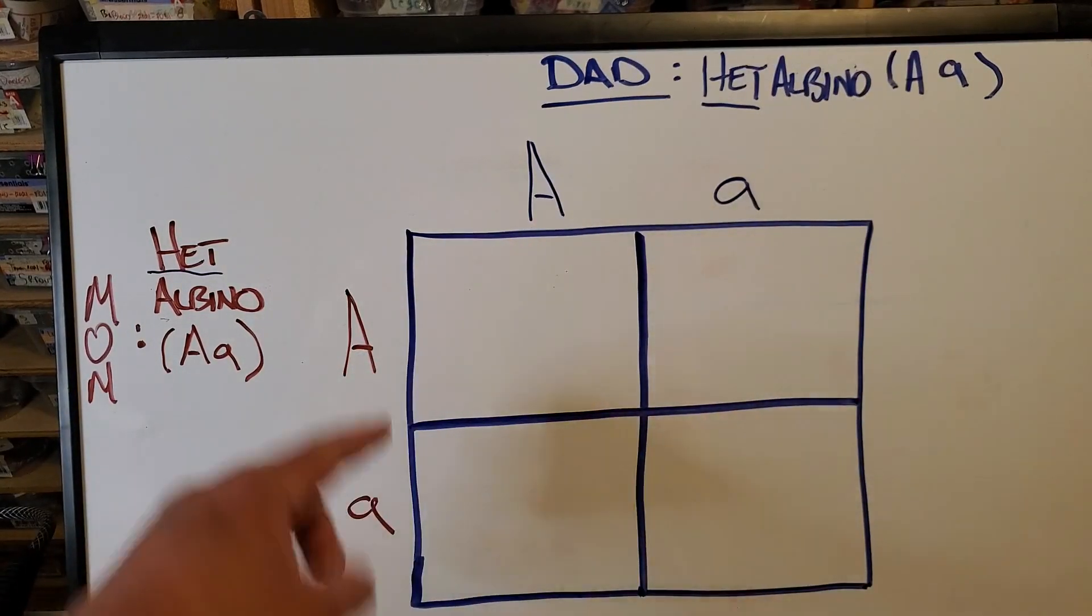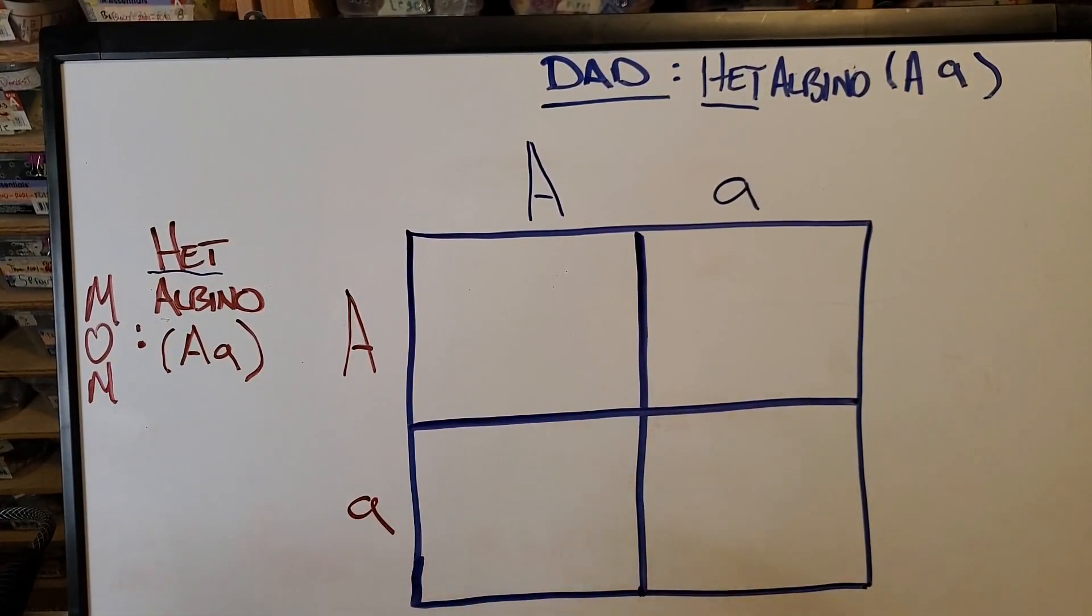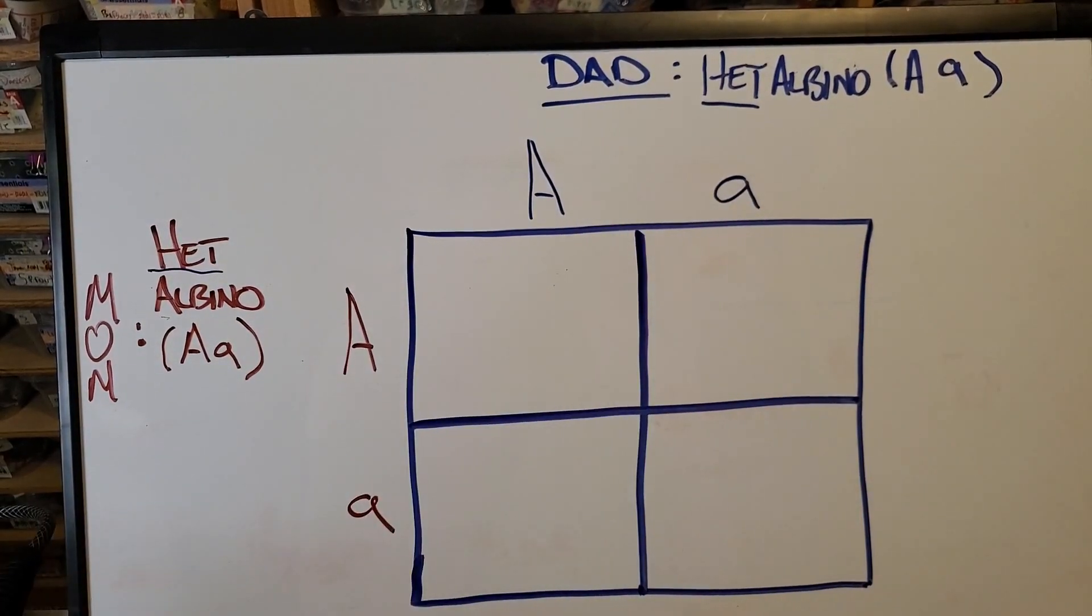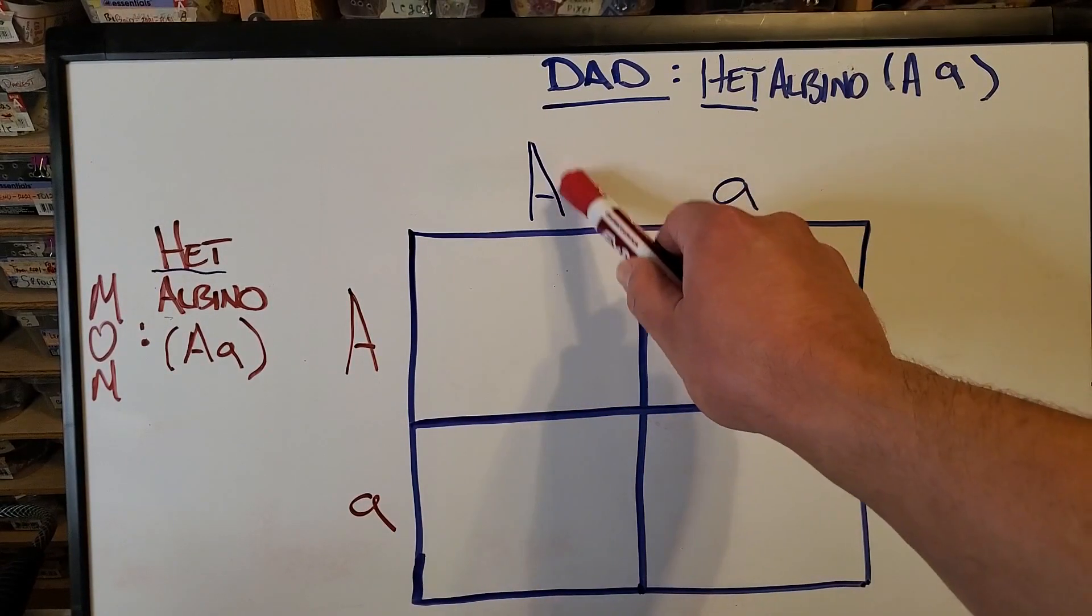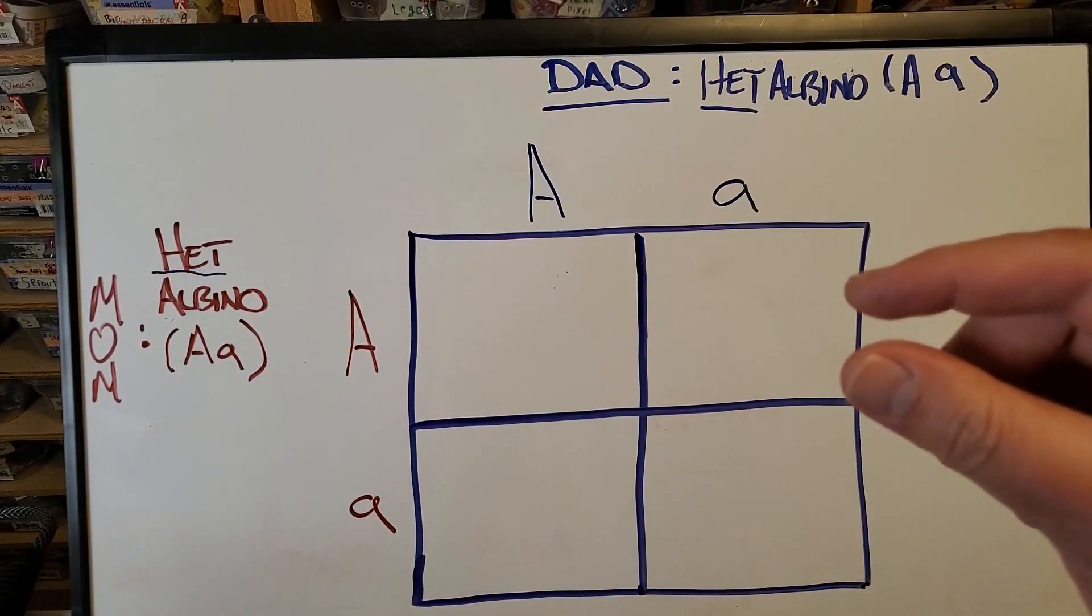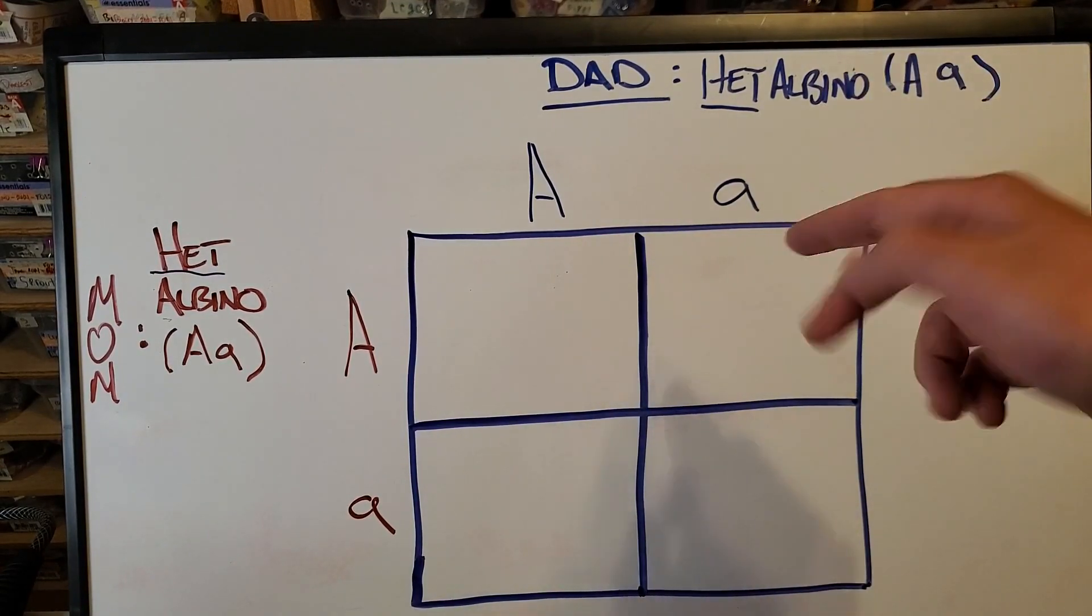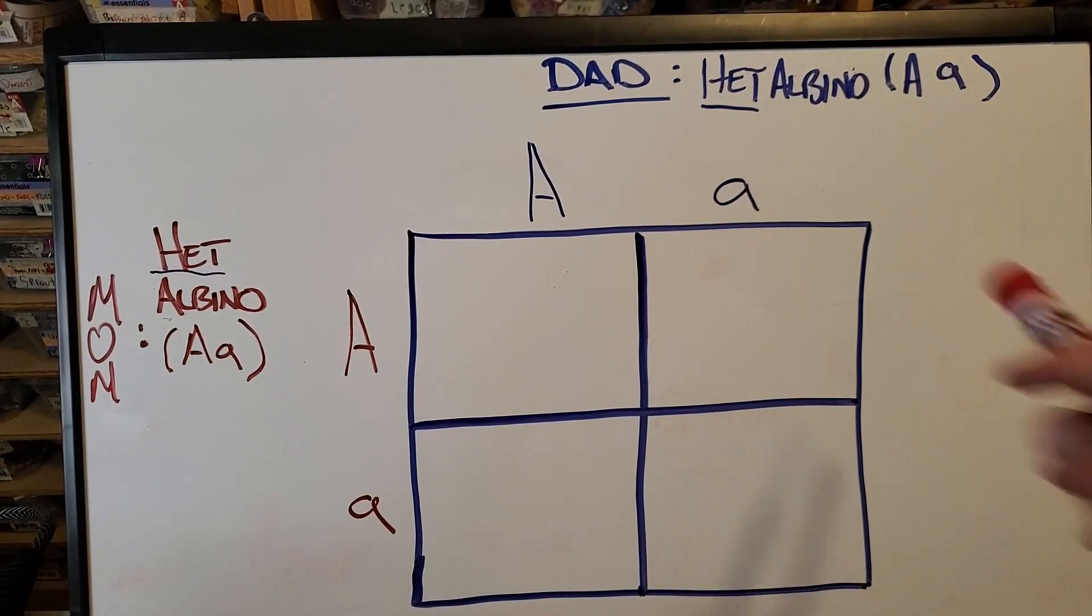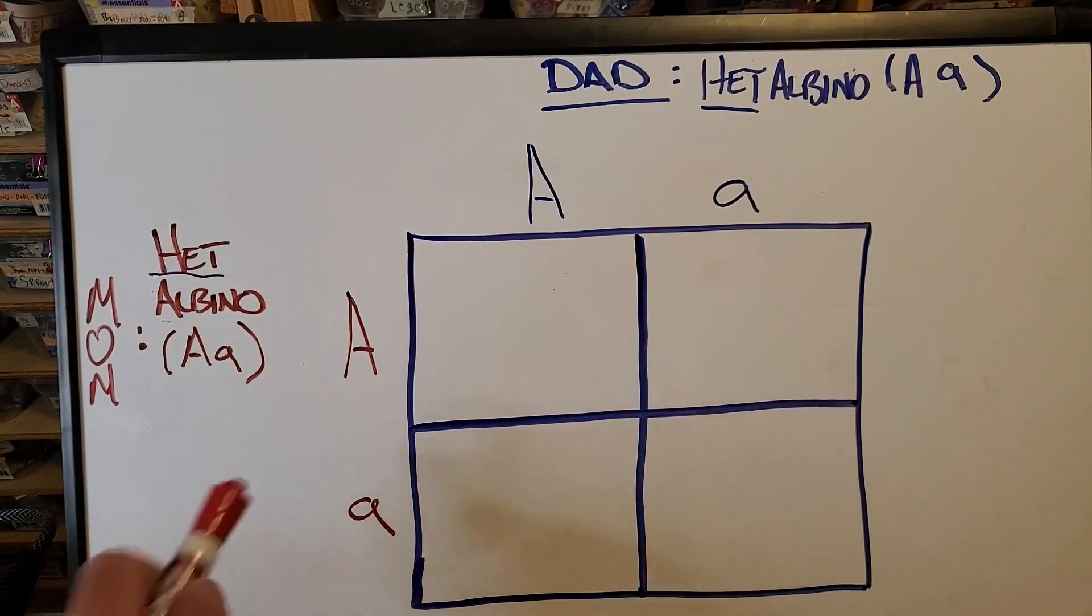Mom is also het for albino. So she too is carrying only one copy of the albino gene. Now real quick, can you guess which letter is the albino gene? If you said lowercase a, you are correct. So dad has one copy of the albino gene, and that's expressed in lowercase a. The uppercase A is the partner gene at that genetic location where the mutation takes place. But the dad did not inherit two copies of the albino gene. Therefore, he is only a het albino. And the mom is the same.